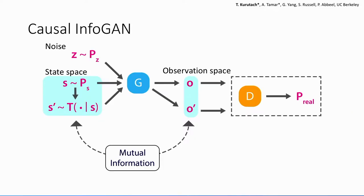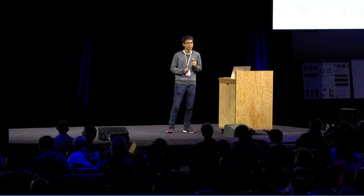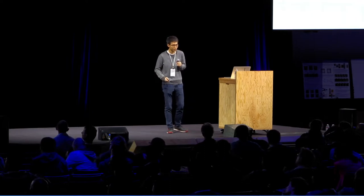Now here is our main idea of the talk. Here we propose Causal InfoGAN, where we want the transition. So first we sample the next state in the latent space from a learned transition model T, and then we use them to generate a pair of observations.